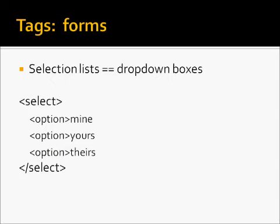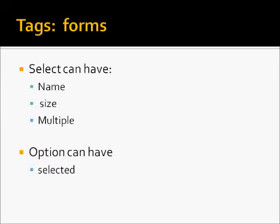Selection lists are essentially drop down boxes for HTML. You would create a select with many options. A select can have a name; a size, which determines how long the list is; and multiple. If multiple is turned on, then it means you can select multiple items on the list. For example, if we had a list that contained hobbies that you have and you had more than one, allowing multiple to be turned on would allow your users to select many hobbies, not just one.